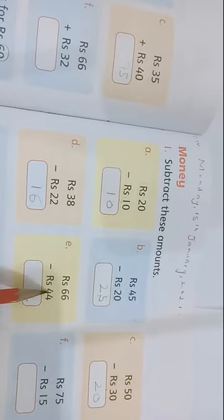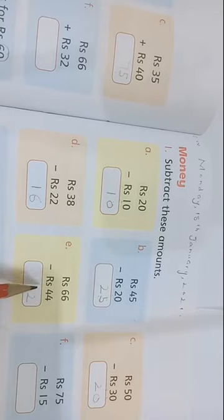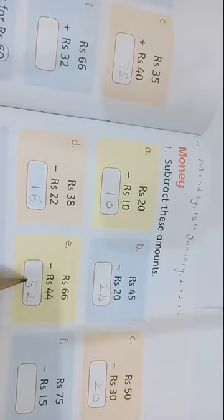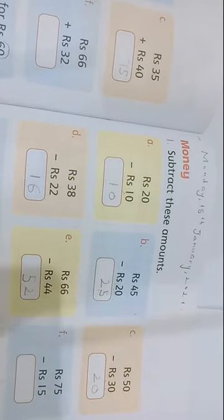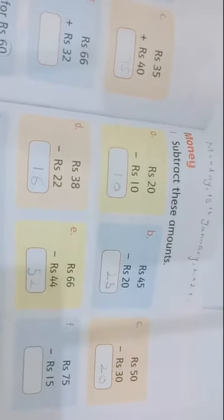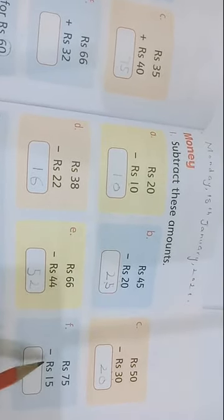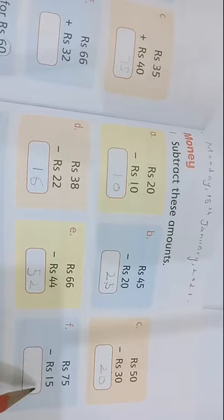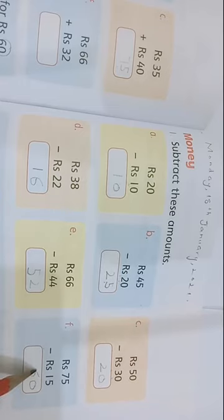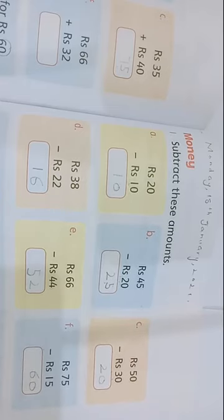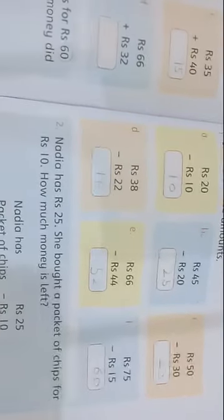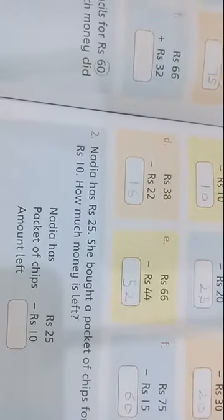6 and 4 is here. I am going to take away 4, 5, 6. I have 52 at this time. Next one is rupees 75 and rupees 15. 5, 5, 5, 0. 7 minus 5. I have 60 at this time. Rupees 60. Next one, question you can check here is number two.